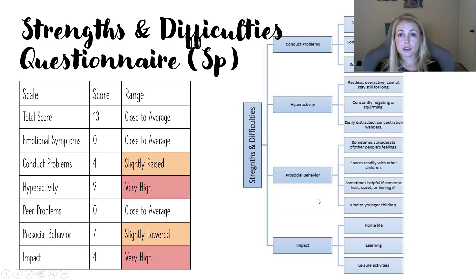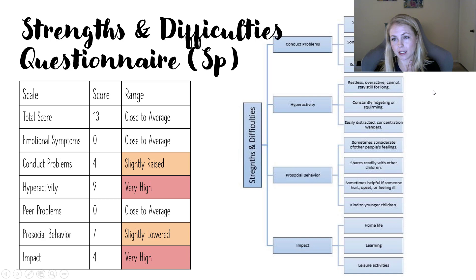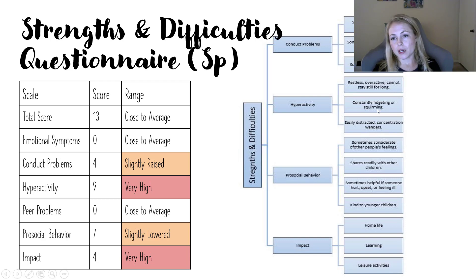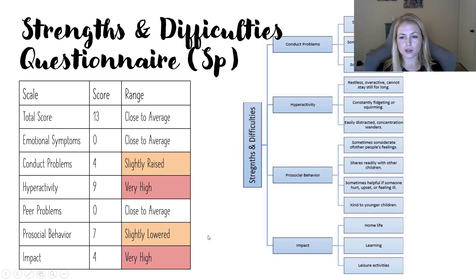Since the parent was unable to fill out the BASC, we had someone go through the Strengths and Difficulties Questionnaire in Spanish with the caregiver. The total score didn't raise huge concerns, but he has very high hyperactivity and very high impact. She reported restlessness, temper tantrums, fighting with other kids, and lying and cheating — more ODD-type things common to see at home, though that wasn't her dominant complaint and we didn't see it across settings. She is also noting constant distraction, restlessness, and being overactive. Her impact score is very high — this is definitely affecting them at home. Some slightly lower prosocial behavior, but not in the red yet.